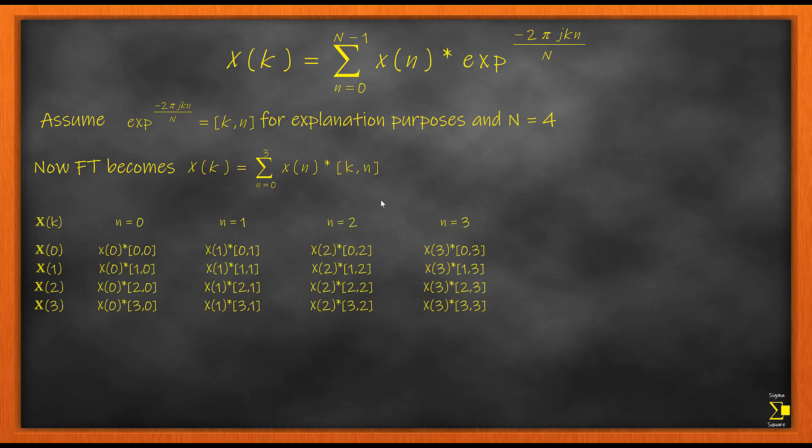Dissecting this equation and applying the index, we get this form where the columns represent the variable n, n equals from 0 to 3, and the rows represent the cases X(0), X(1), X(2), X(3). k also goes from 0 to 3.